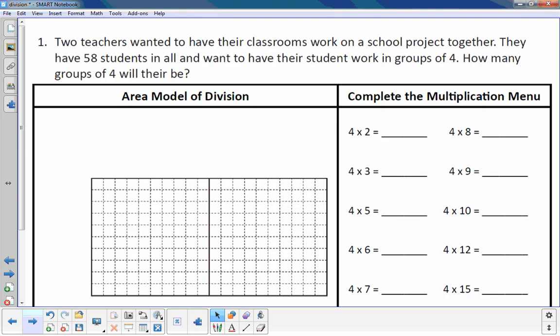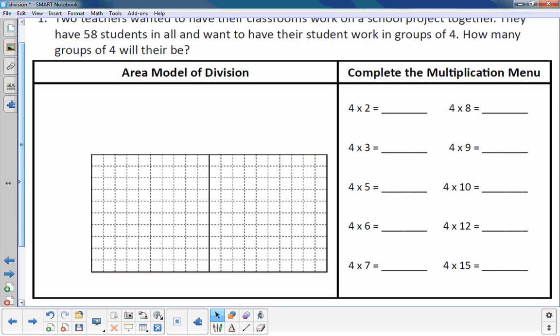Two teachers wanted to have their classrooms work on a school project together. They have 58 students in all and want to have their students work in groups of four. How many groups of four will there be? And then down below, there's a space. We're going to use the area model to solve the division problem. And on the right, there's a multiplication menu.